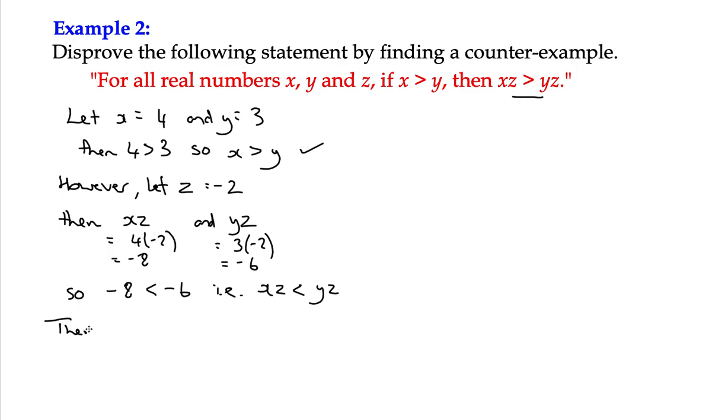So we can say, therefore, the conjecture is false, as here when x is greater than y, then xz is less than yz. So again, it's not just about writing down the numbers and saying those numbers will make it false. It's about going through the process of saying, first of all, the first condition is met, but the second condition is not met, and that makes the conjecture false.